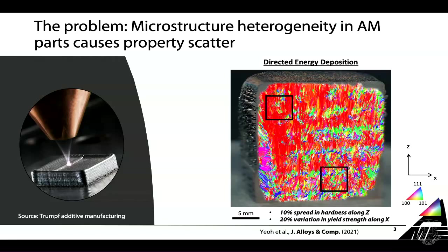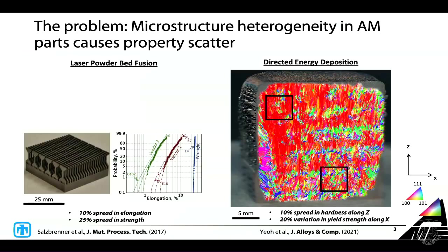Because microstructure dictates properties, you would not be surprised to know that we actually measure quite a bit of variability in mechanical properties. Hardness shows a 10% spread along Z, the build direction. We measure 20% variations of yield strength along X. This problem of microstructure heterogeneity and scatter in mechanical properties is not only found in Inconel 718 when processed with DED.